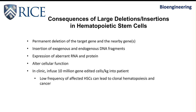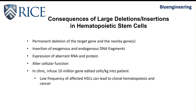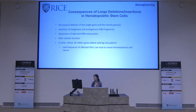What are the consequences of these large deletions and insertions in hematopoietic stem cells for gene editing therapy? Large deletions could lead to permanent deletion of target genes and nearby genes. Insertion of exogenous or endogenous DNA fragments into the CRISPR double-strand break could lead to expression of aberrant RNA or protein, alter cellular function, and impair stem cell potential. In clinical application, we need to infuse over 10 million gene-edited cells per kilogram of patient weight, so even very low frequency of affected hematopoietic stem cells could lead to clonal hematopoiesis and potentially cancer.